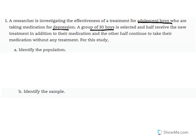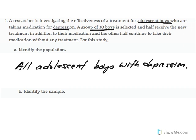Therefore, we understand that the population, by definition, includes all members of the group of interest. So in this case, that would be all adolescent boys with depression. And the sample would include the 30 boys that are going to be given treatment or put into the control group — the group that does not receive treatment.